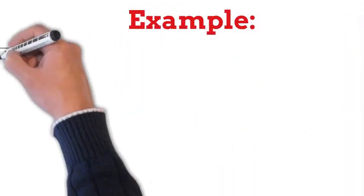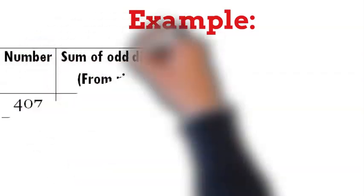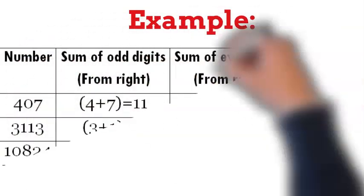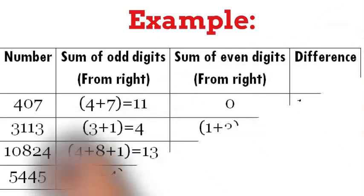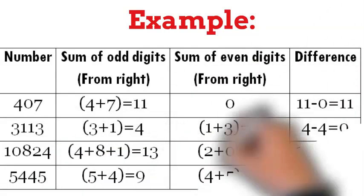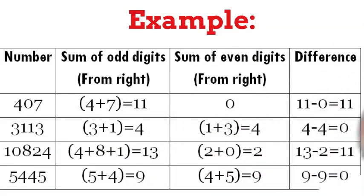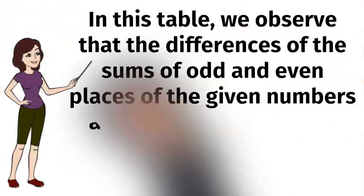The numbers are 407, 3113, 10824, 5445. We observe that the differences of the sums of odd and even places of the given numbers are 0 or 11, which are the multiples of 11. So the given numbers are divisible by 11.